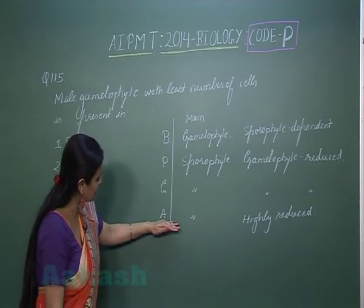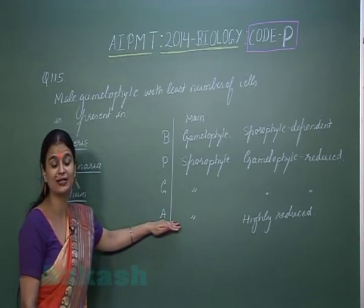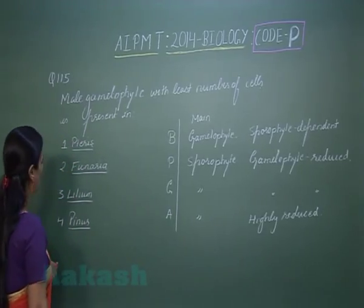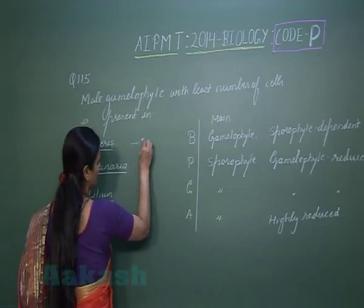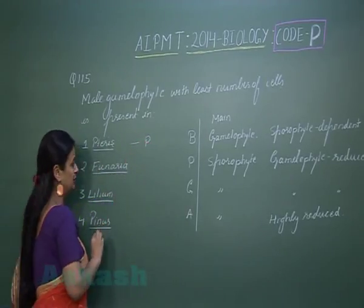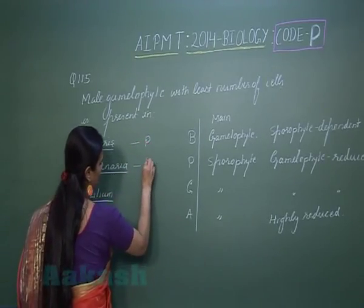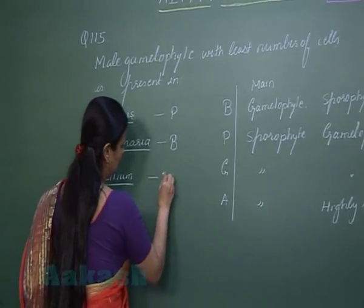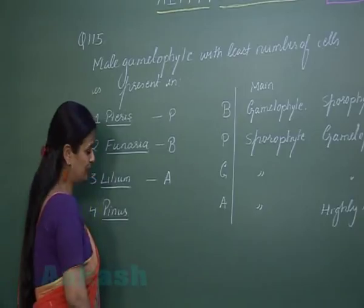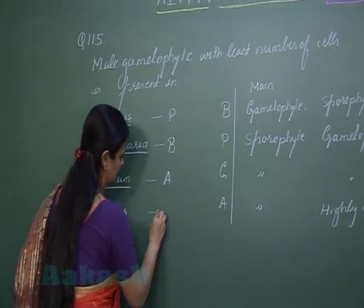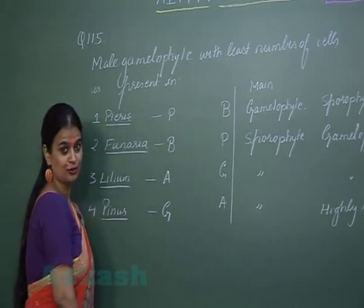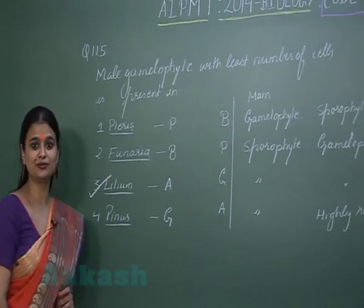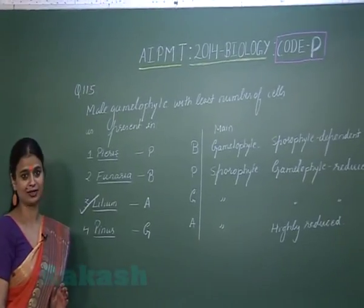The least number of cells in the gametophyte is found in angiosperms. Looking at the four options: Pteris is a pteridophyte (fern), Funaria is a bryophyte (moss), Lilium is an angiosperm, and Pinus is a gymnosperm. So the right option here is the angiosperm — Lilium — and option number 3 is correct.